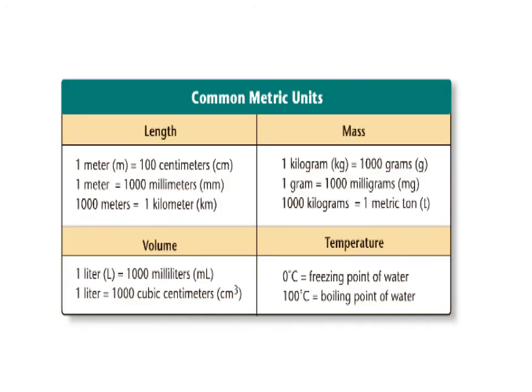Here are some common metric units and conversions that your textbook gives. The big one we haven't talked about yet is temperature. The freezing point is zero degrees Celsius and the boiling point is 100 degrees Celsius. So zero degrees Celsius is freezing and 100 degrees is boiling — very easy to remember.